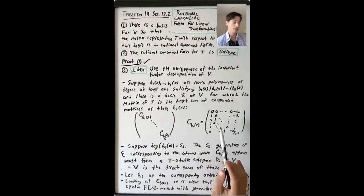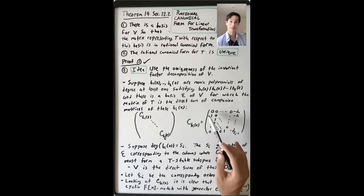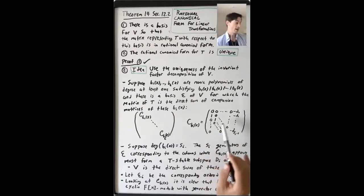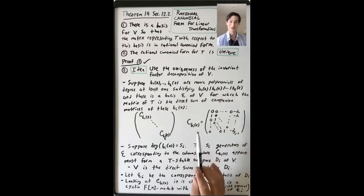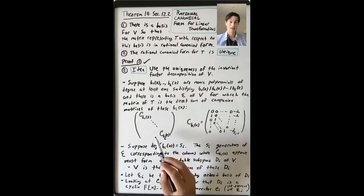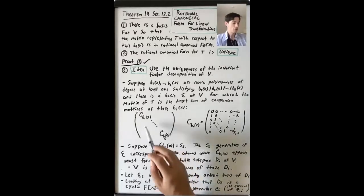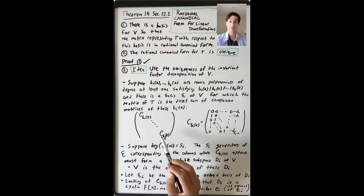The companion matrix has zeros along the main diagonal, ones along the sub-diagonal, and the last column has the negative of the coefficients of BI(X) — here using D for the coefficients since B is used for the polynomials. The idea is to use this matrix in rational canonical form to write V as a direct sum of cyclic F[X] modules. It won't look the same as the decomposition we already have. We're going to use this matrix to get a decomposition of V as a direct sum of cyclic F[X] modules.